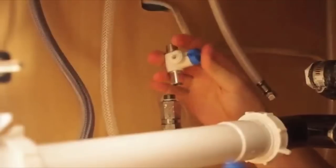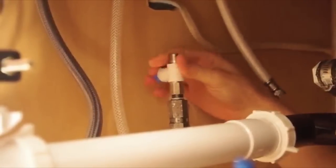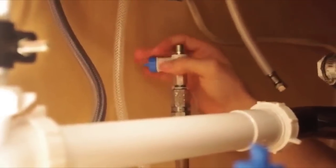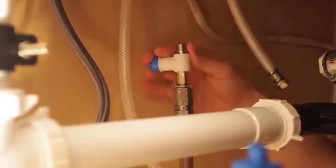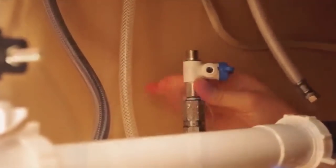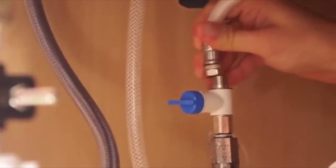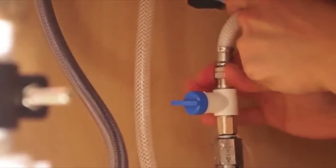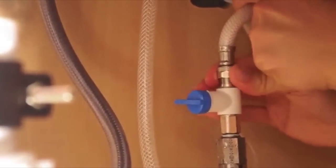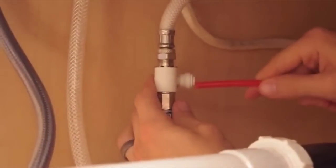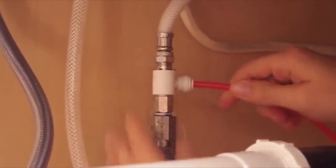John Guest angle stop valve. Remove the cold water flex line and install the valve. Reinstall the cold water flex line onto the valve and tighten. Insert the red tubing into the adapter.